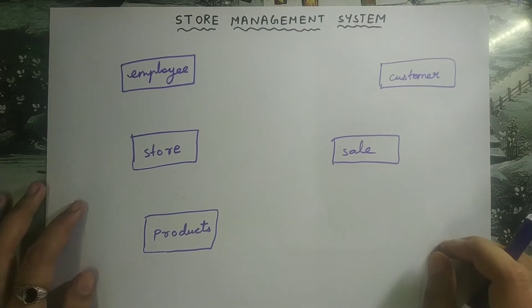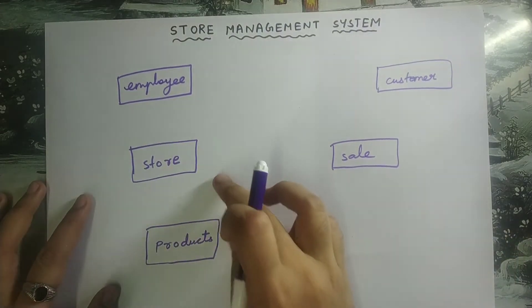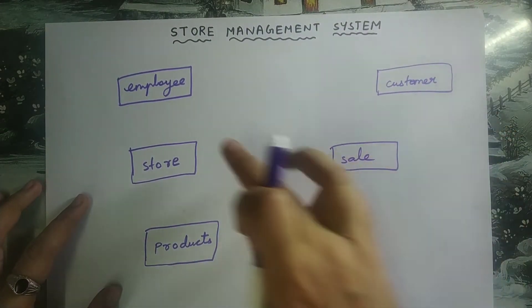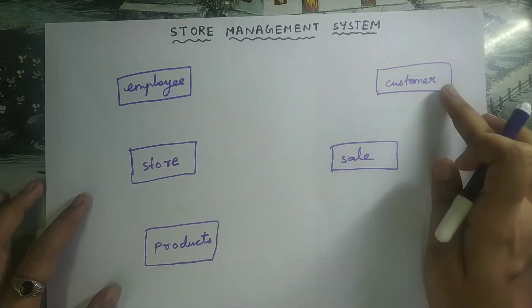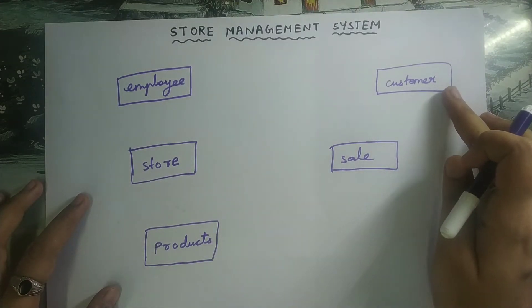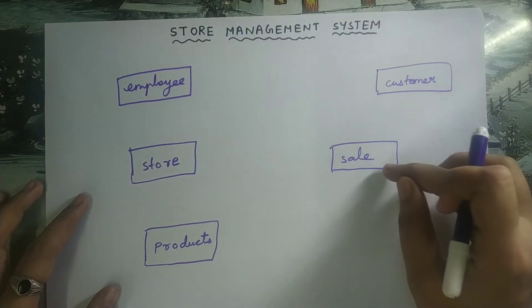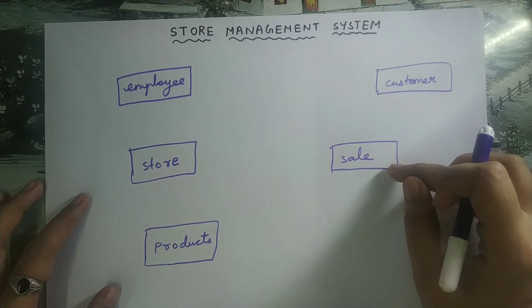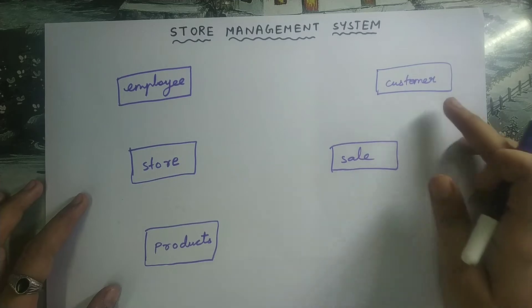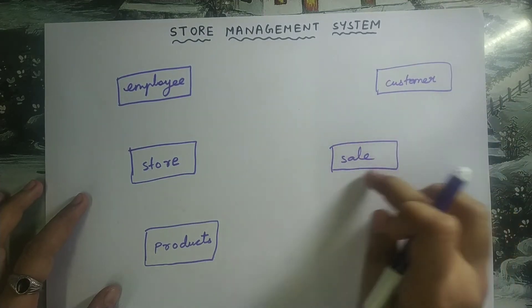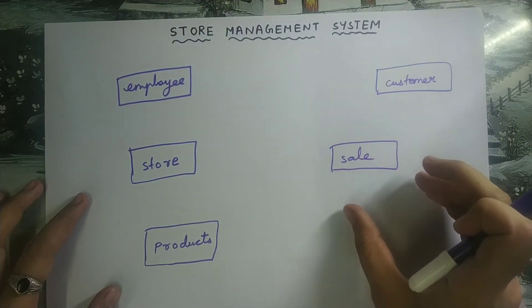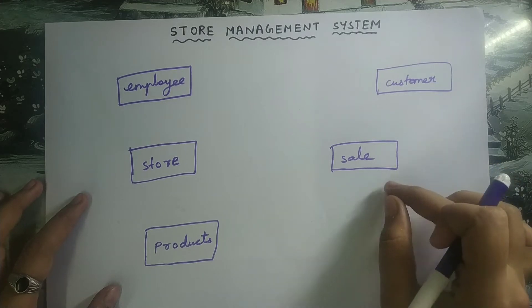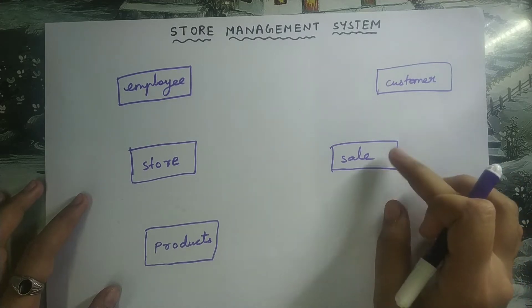So totally there are five entities: employee, store, product, sale, and customer. Out of these five, employee, store, products, and customer are physically present, whereas sale is conceptually existing. We are not able to see it but it is happening, so therefore sale is also an entity.